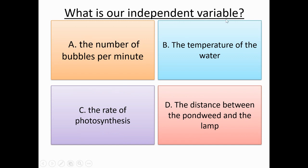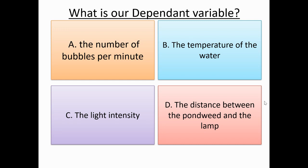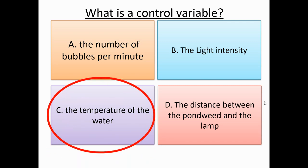Another question: what is our independent variable specifically for this investigation? Please read these boxes, pause the video, and when you unpause I'll let you know which one it is. The independent variable is the distance between the pondweed and the lamp — the distance we are changing. What is our dependent variable? It is the number of bubbles per minute. What is a control variable? A control variable is the temperature of the water — something else that may affect the dependent variable, the rate of photosynthesis.